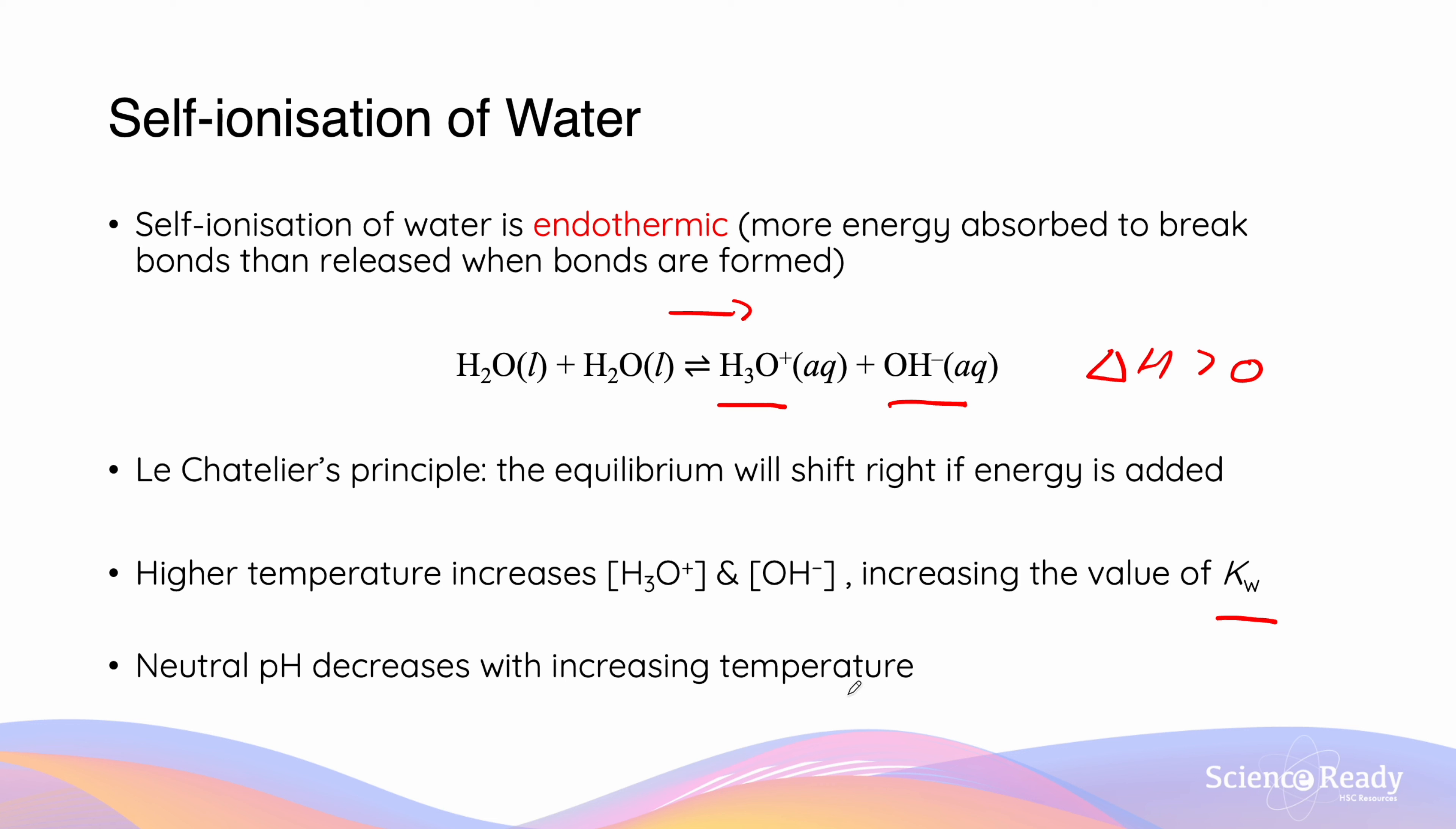However, it's important to recognize that a decrease in neutral pH does not mean that it's more acidic, as the acidity of the substance is still dependent on the relative concentrations of hydrogen and hydroxide ions.